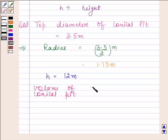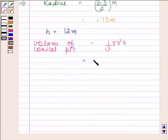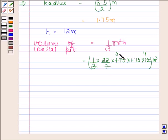Volume of conical pit is equal to 1/3 πr²h. By substituting the values of r and h, we get 1/3 × 22/7 × 1.75 × 1.75 × 12 meter cube. On cancelling 12 by 3, we get 4, and on cancelling 1.75 by 7, we get 0.25. On simplifying this, we will get 38.5 meter cube.